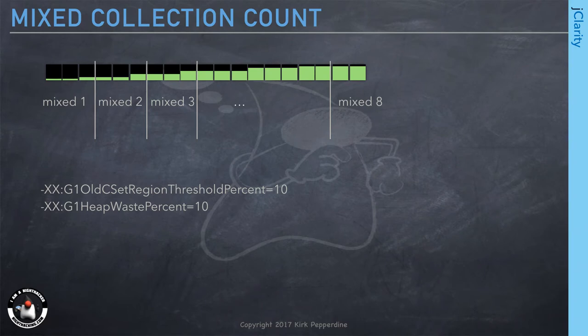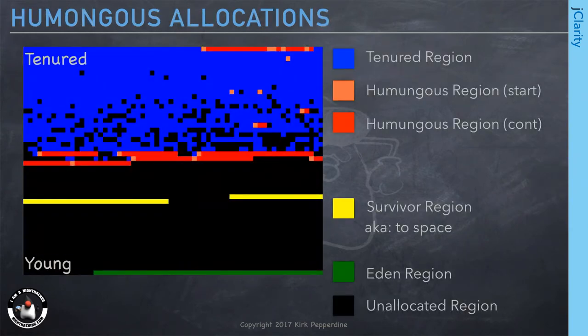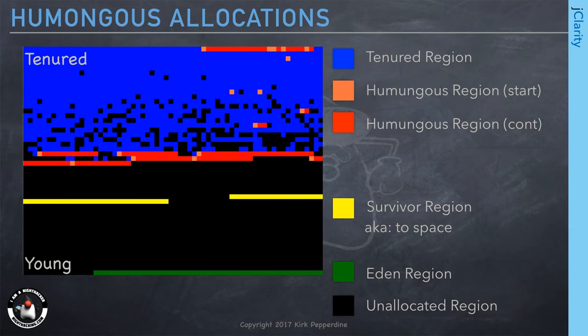There are parameters that manage how the mixed collections are divided. If you want to know what the whole heap actually looks like with everything in it, this diagram was actually drawn by an application I have on GitHub, from data collected from a live application. So this is what the heap actually really looks like. We have tenured at the top, young at the bottom, and a reserve space in the middle. The red and coral bits are humongous allocations.